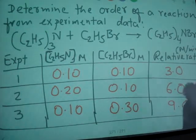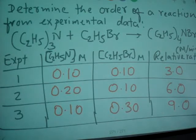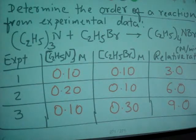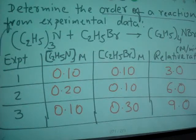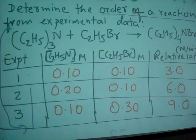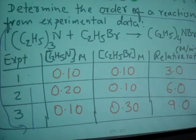Okay, so here is the problem. We need to determine the order of a reaction from experimental data. These are experiments 1, 2, and 3, and these are the concentration of each reactant and the relative rates. This is the main reaction.